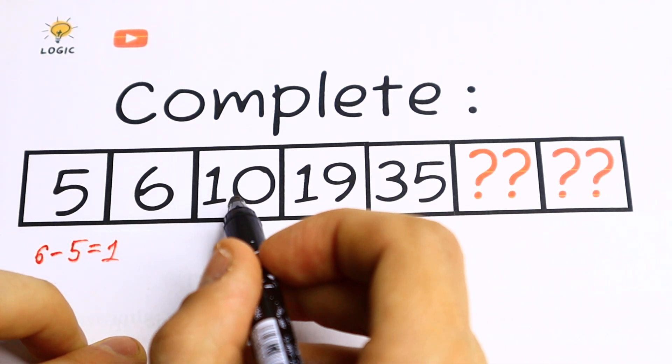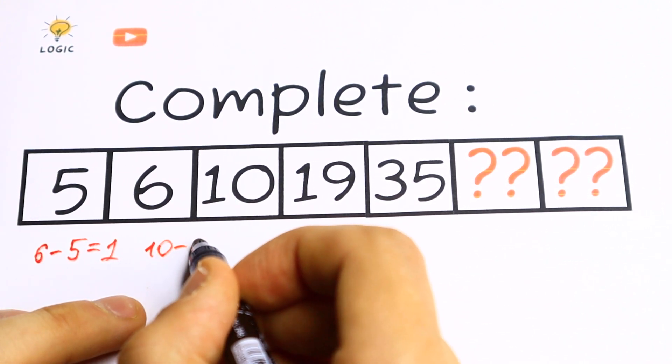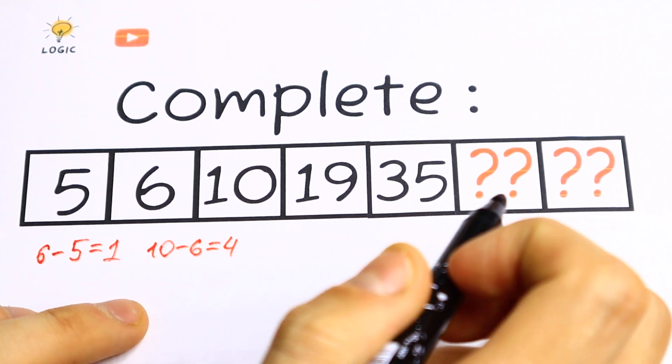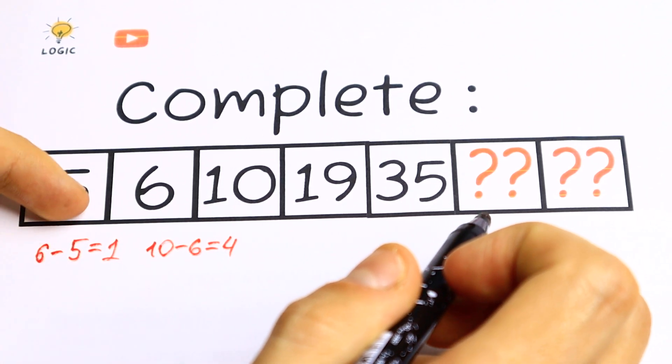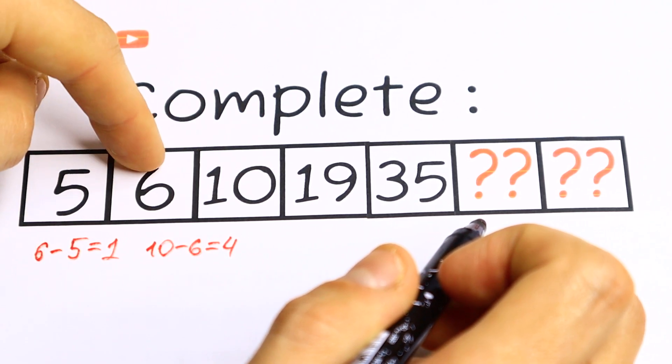Let's subtract from the third element the second one. What we will have? 10 minus 6. We will have 4. And let's use the same logic. Let's subtract the third, the second from the first, the third from the second.